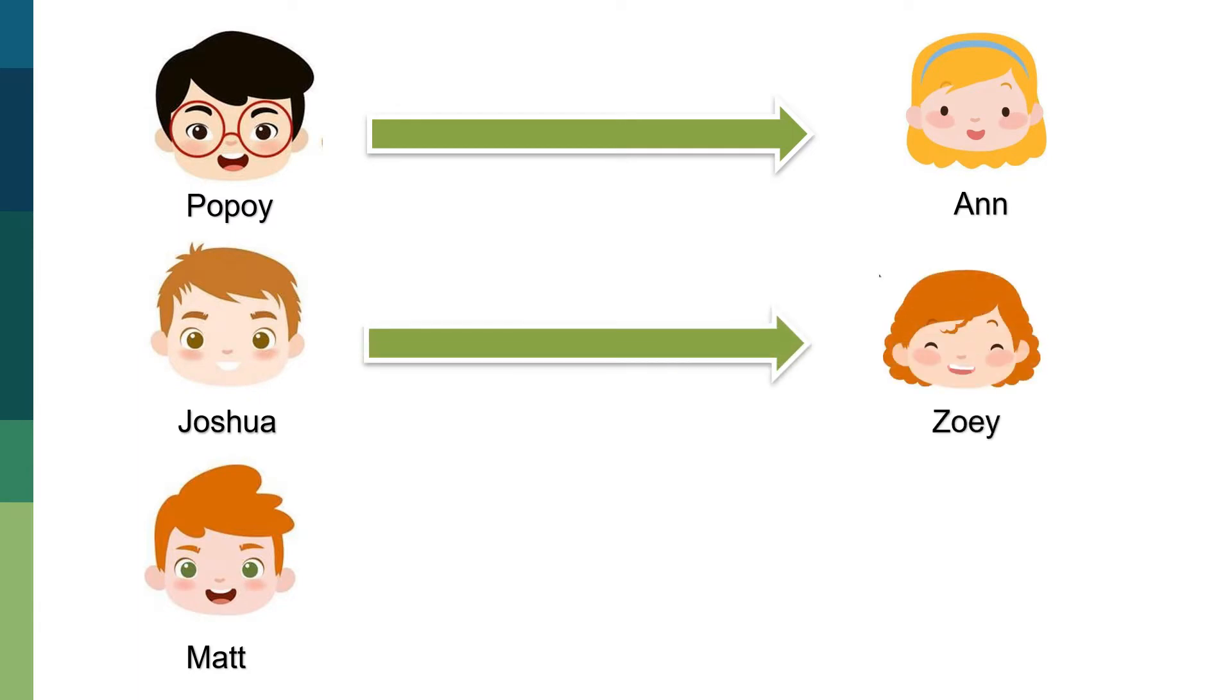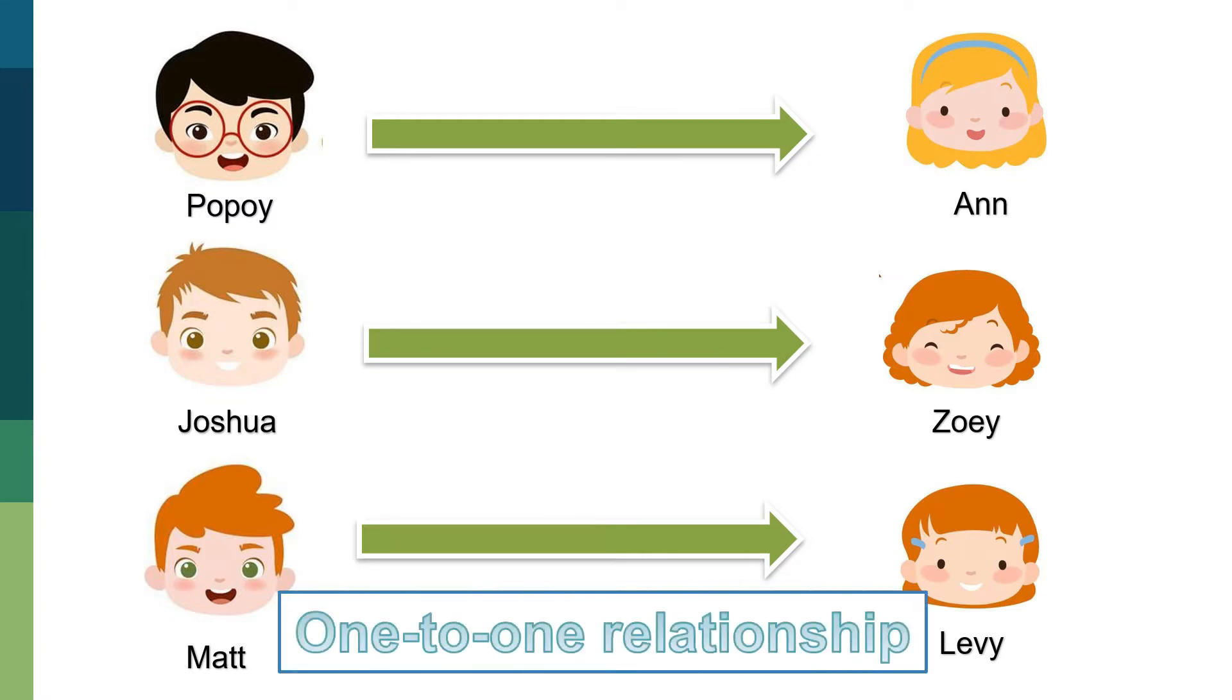Popoy asked Ann to be his date, Joshua asked Zoe, and Levi was asked by Matt. This type of relationship is called one-to-one relationship.